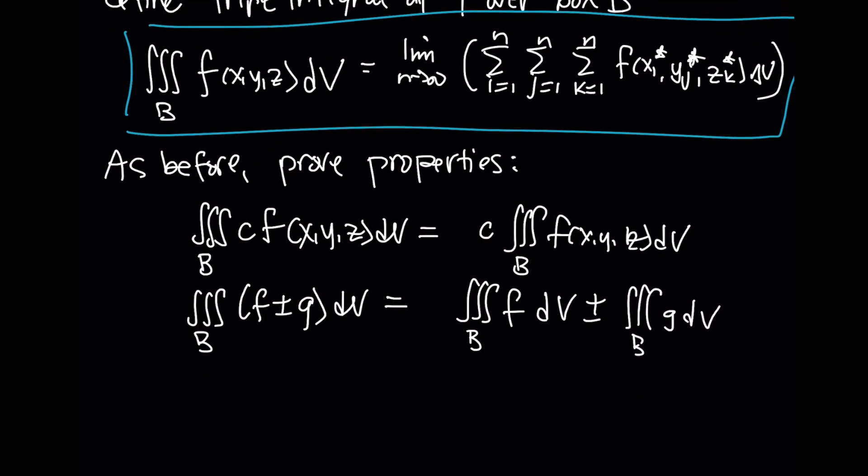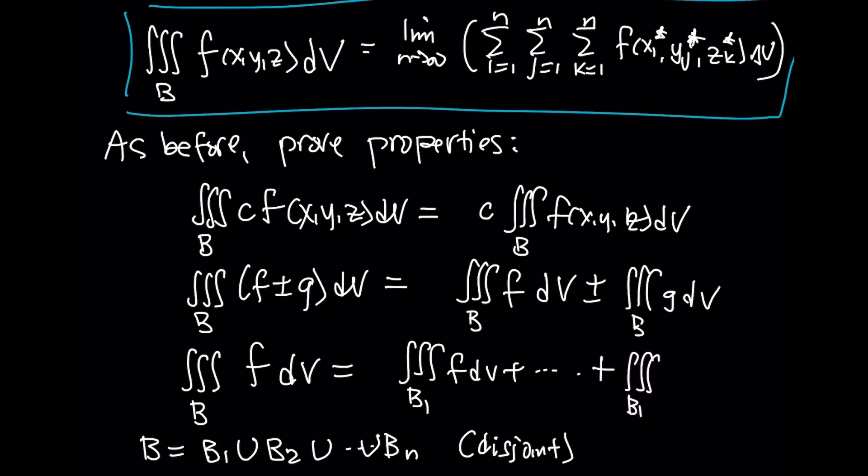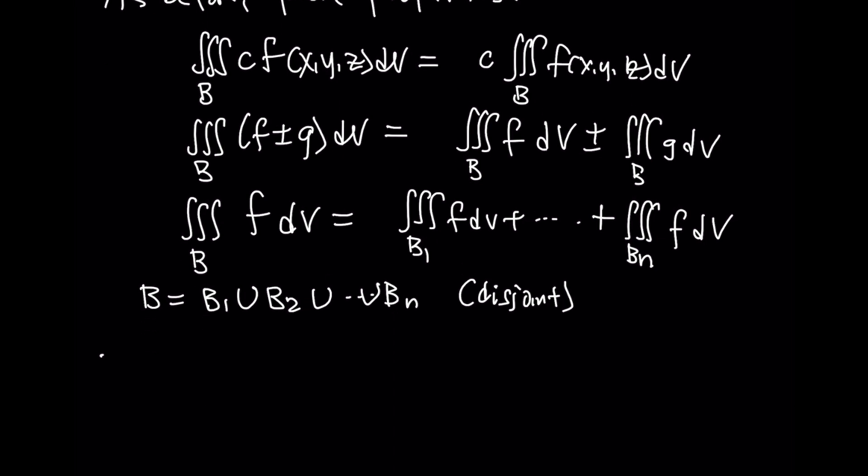And most importantly for us here, integrating over some B, where B is a union of disjoint boxes, then the triple integral is a sum of all of these triple integrals over these individual regions. Now this is exactly the kind of property that held for single and double integrals, and naturally it will hold here by the similarity of the definition.